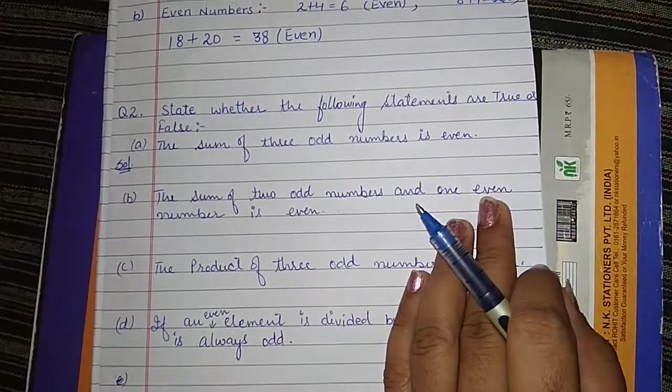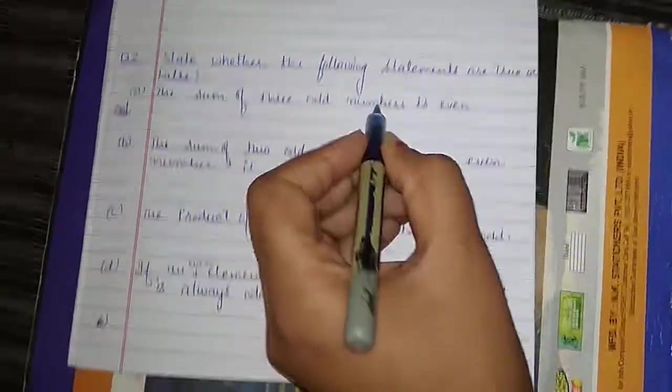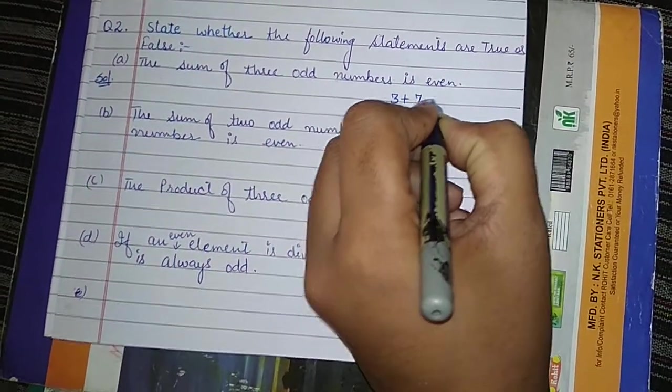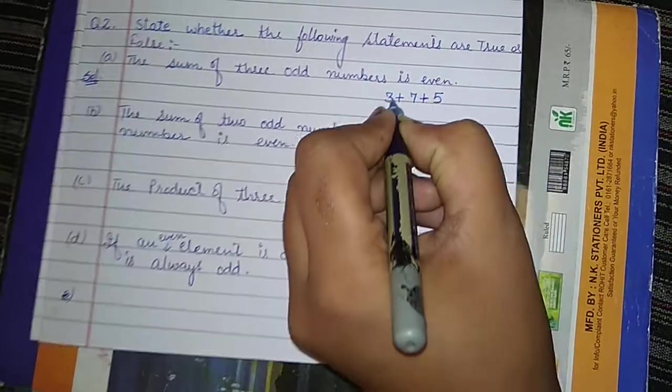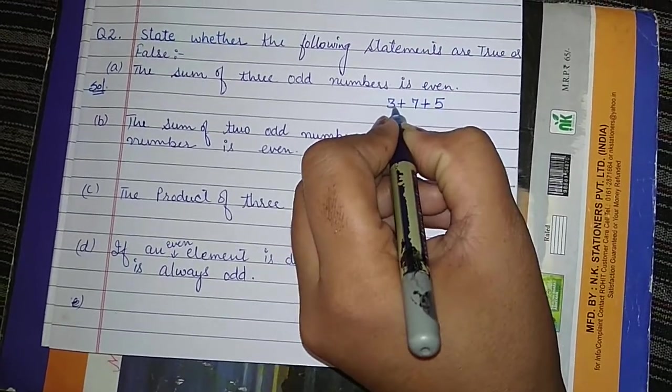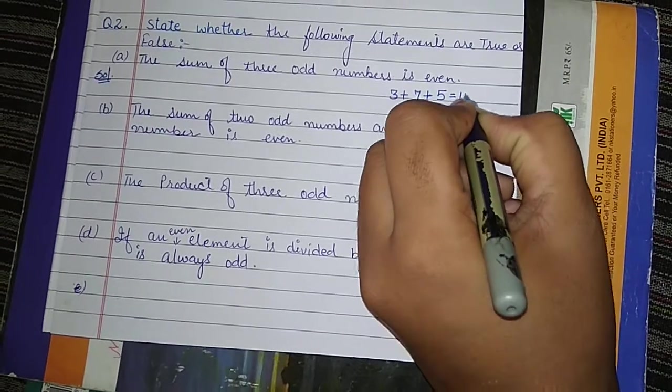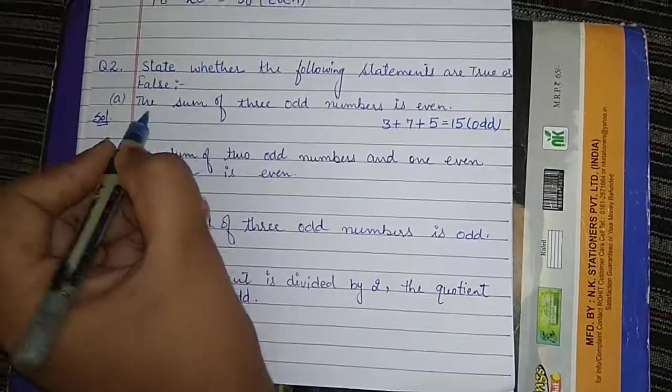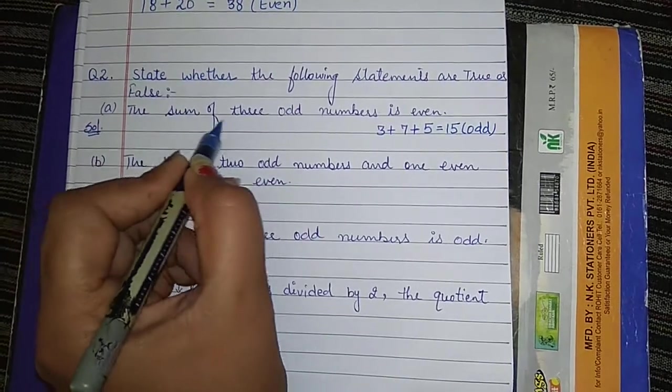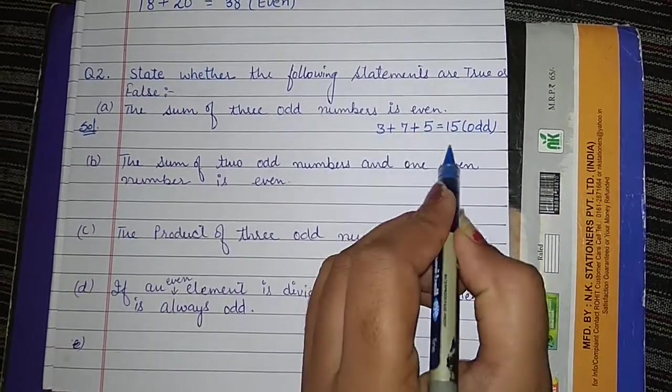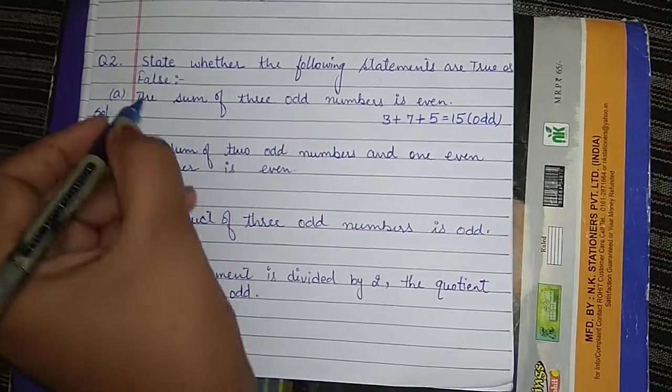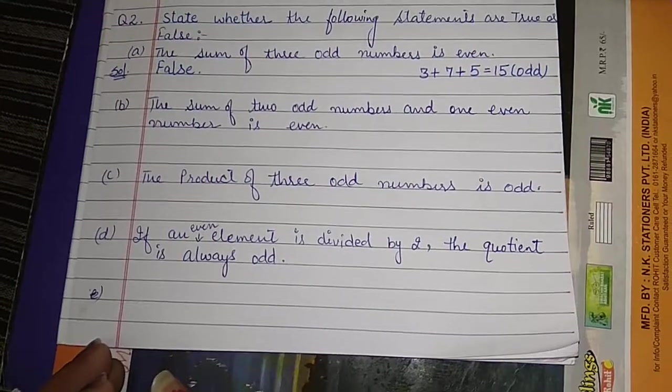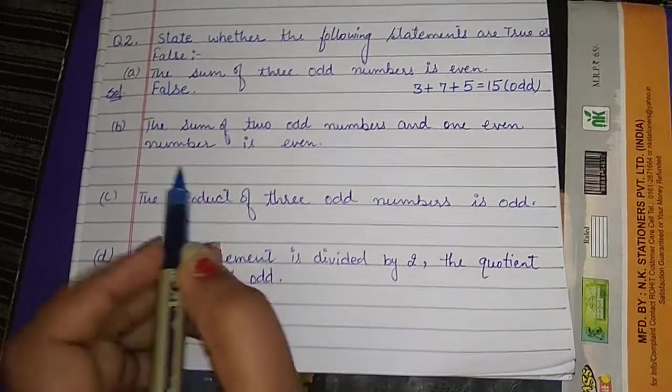First we add the three odd numbers, then what we get. Three plus seven plus five: seven plus three equals ten, ten plus five, that is fifteen. Here we got odd, but in the statement given, the sum of three odd numbers is even. But we get odd, it means this statement is false.